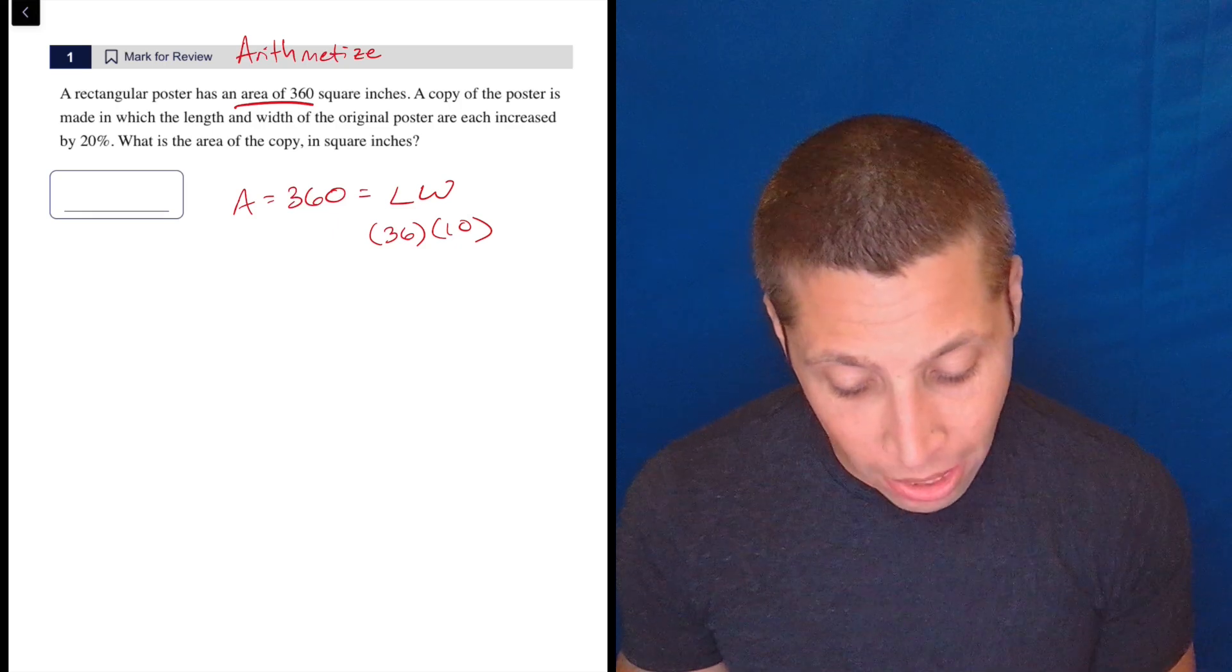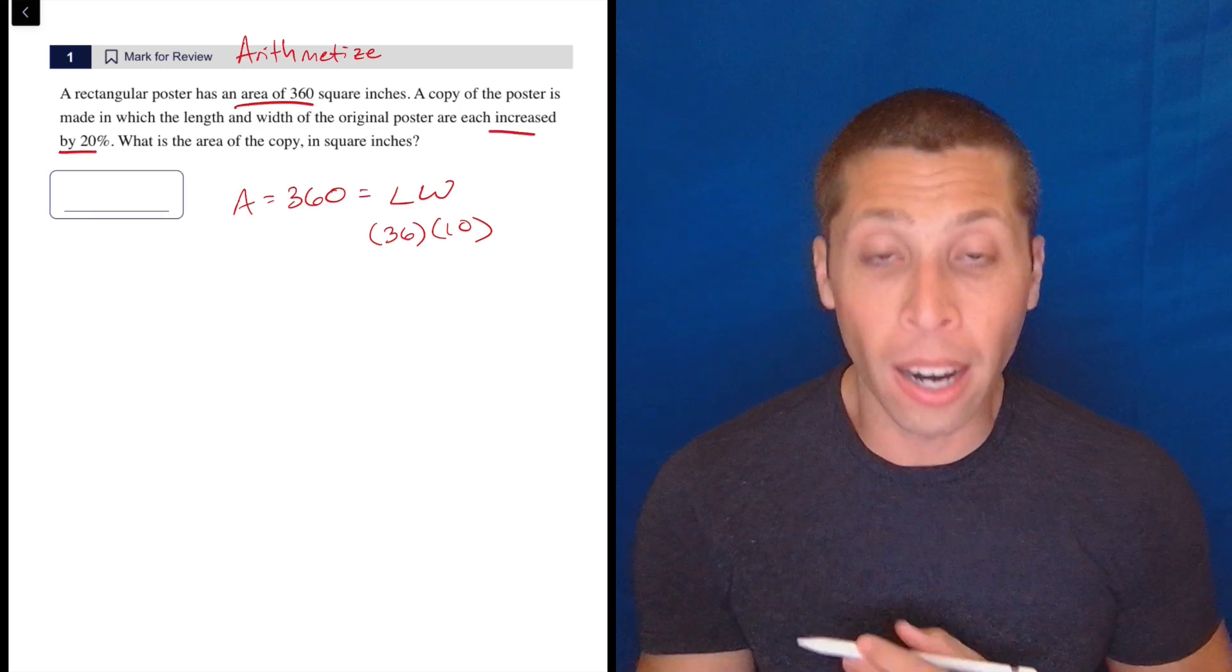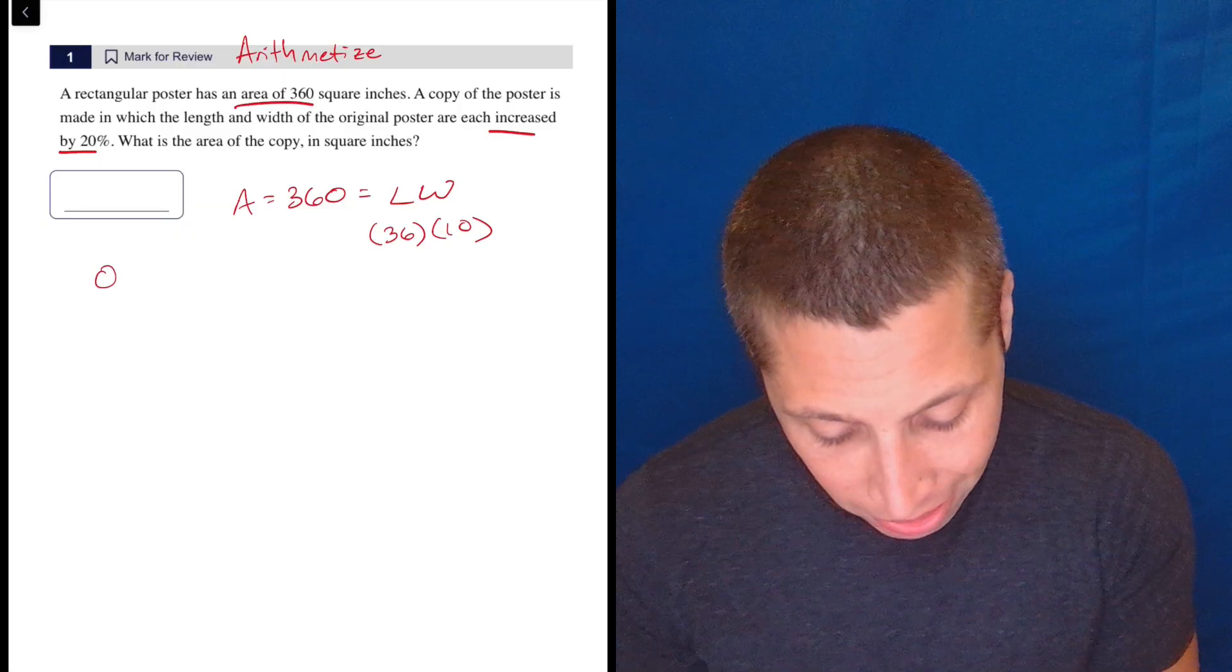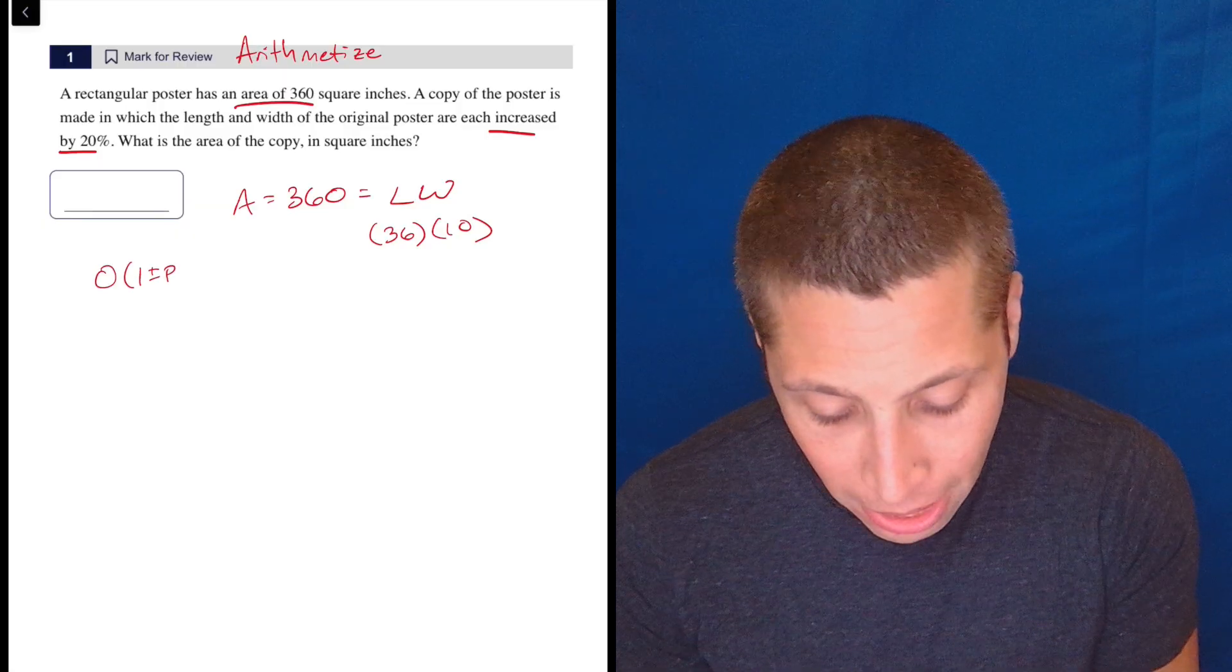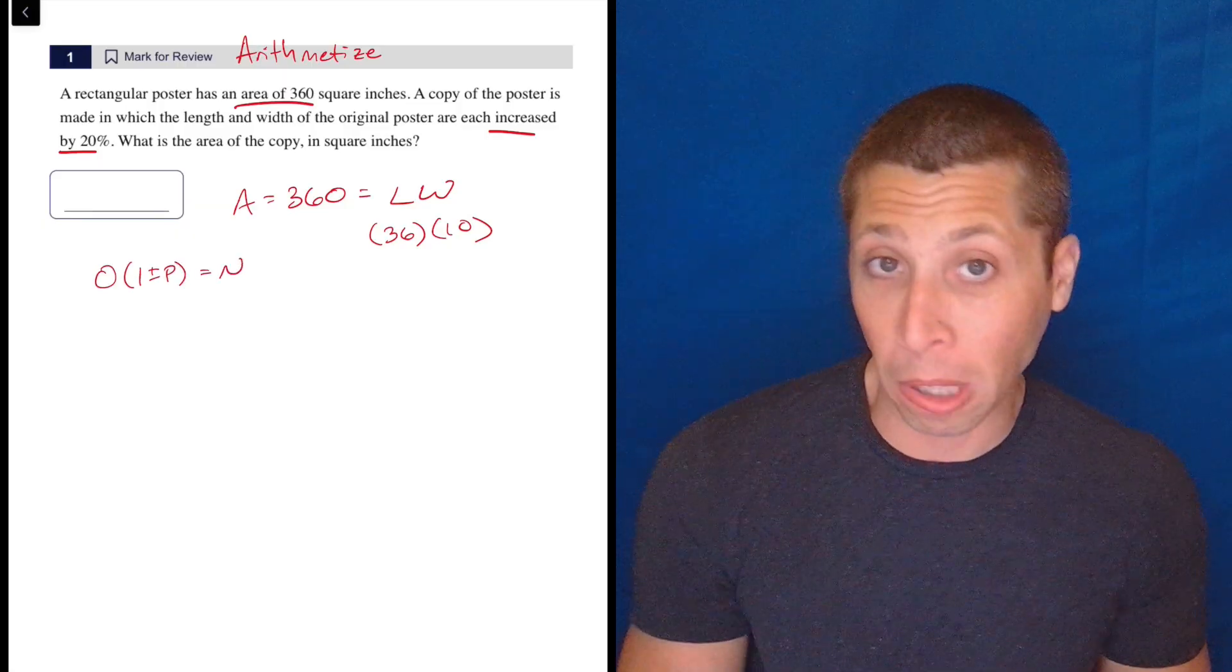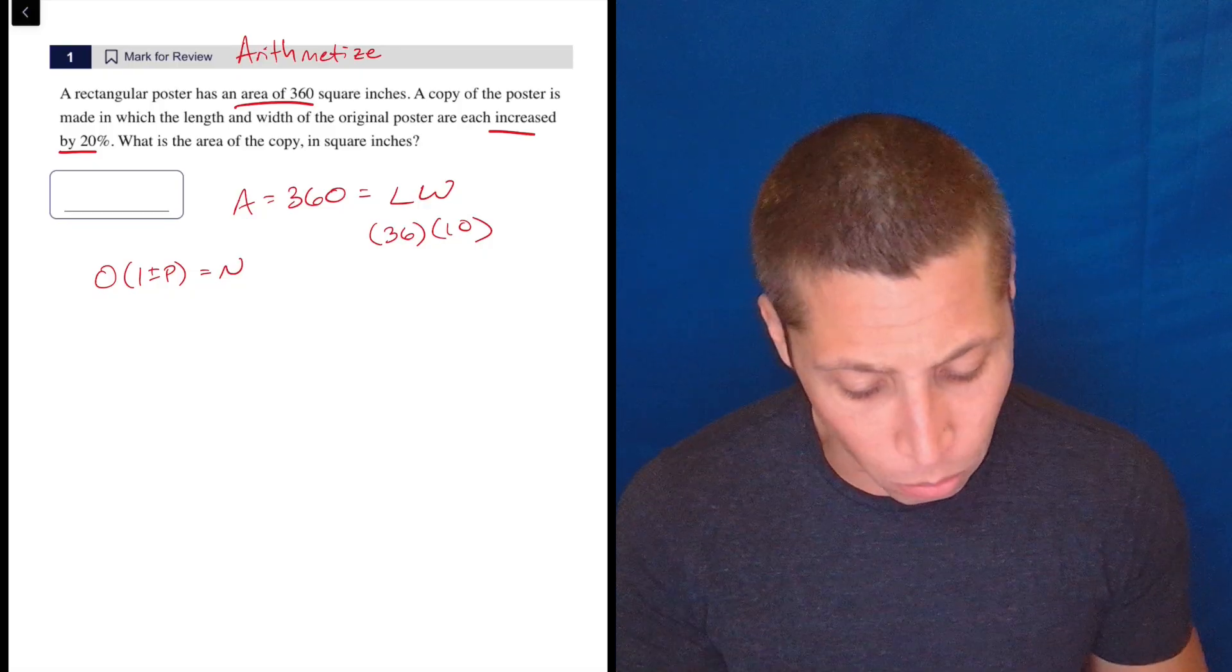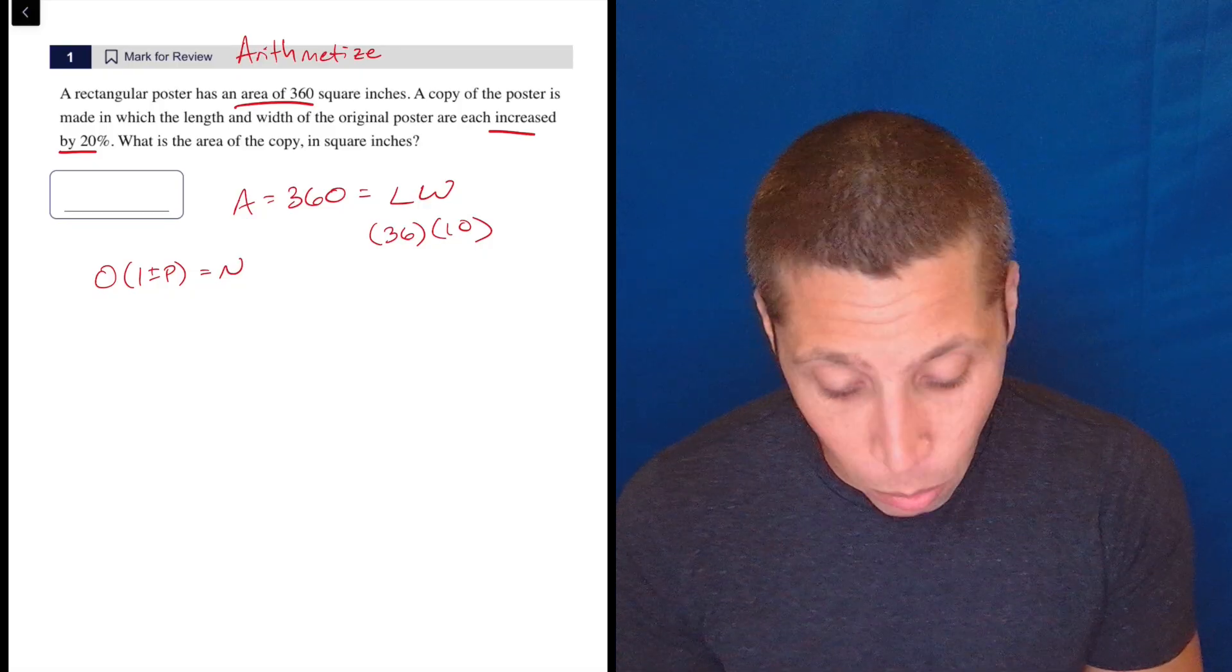Now I can follow this instruction really easily. I'm going to increase the dimensions by 20%. So we're going to use the basic one plus or minus P formula here. That's our formula for percentages. I could do this very easily in my calculator without showing it on the scratch, but I'm going to do it for you. So my original, let's say the width,